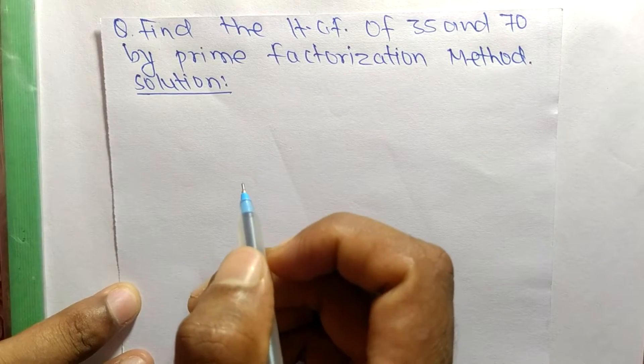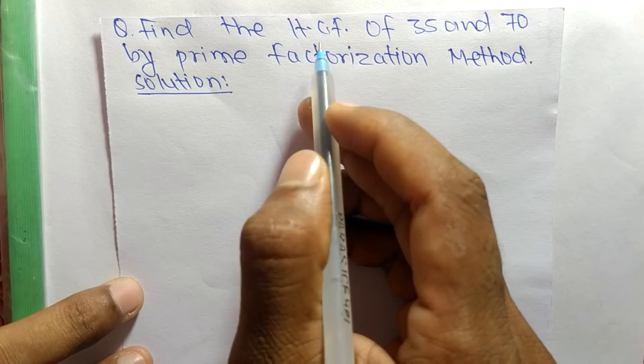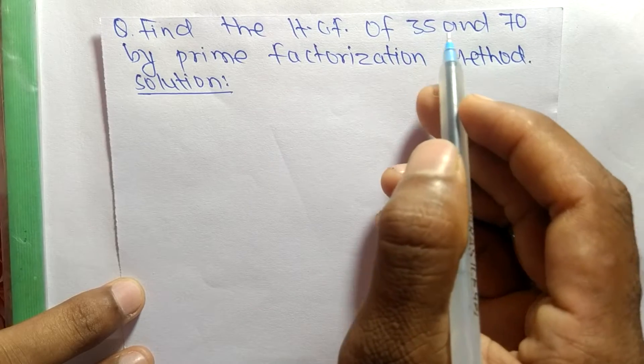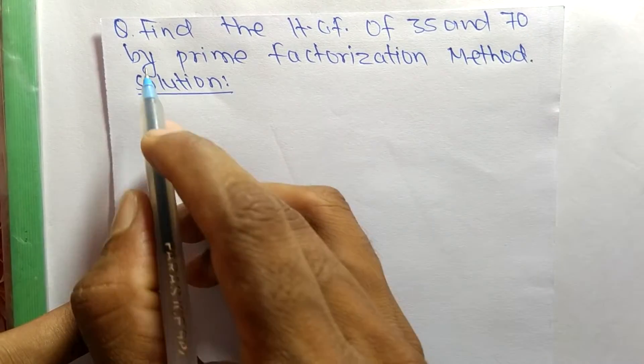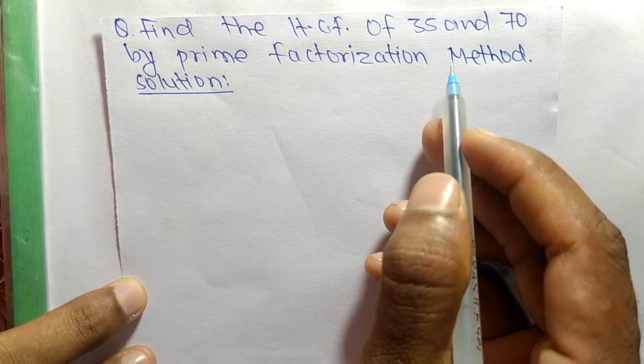So today in this video we shall learn to find the HCF of 35 and 70 by prime factorization method.